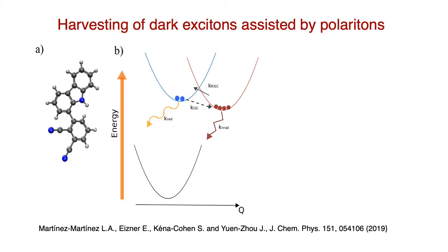In particular, we are interested in investigating whether strong coupling could be beneficial for triplet harvesting. For illustrative purposes here I am just displaying a generic organic molecule which features three electronic states. One optically dark, the triplet. One optically bright, the singlet, here in blue, and the ground state in black.